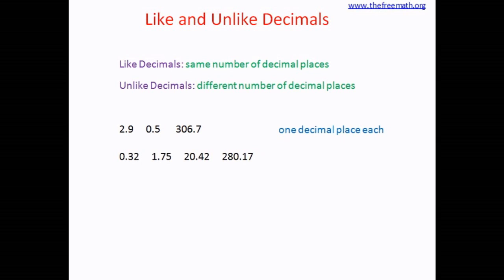In the next set of numbers, the numbers are 0.32, 1.75, 20.42, and 280.17. In all these numbers there are two decimal places. That means these decimals are also like decimals.